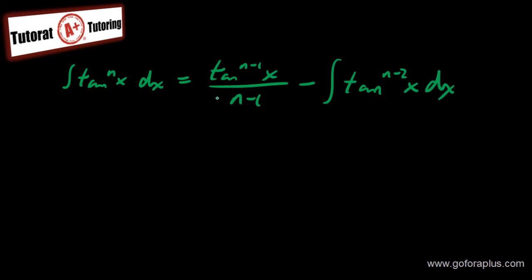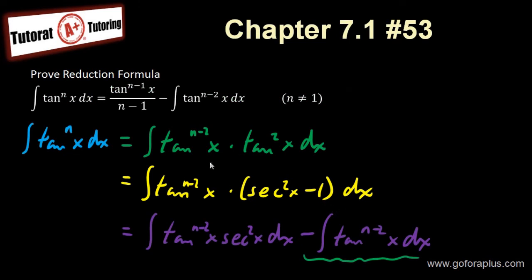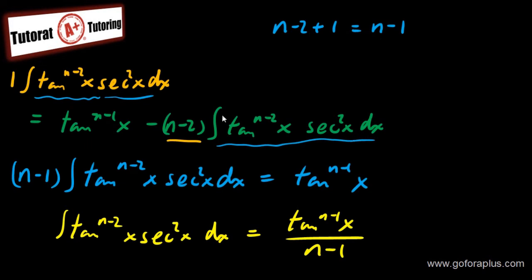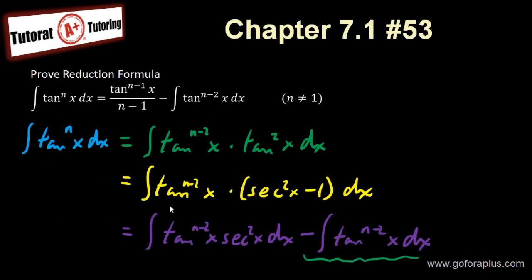This is how we prove this reduction formula. To recap: I separated into two integrals and already had the last part of the proof. I just needed to evaluate the middle integral using integration by parts, simplified by grouping like terms, found what that integral equals, and put it back into the original separated integral to get the final answer.